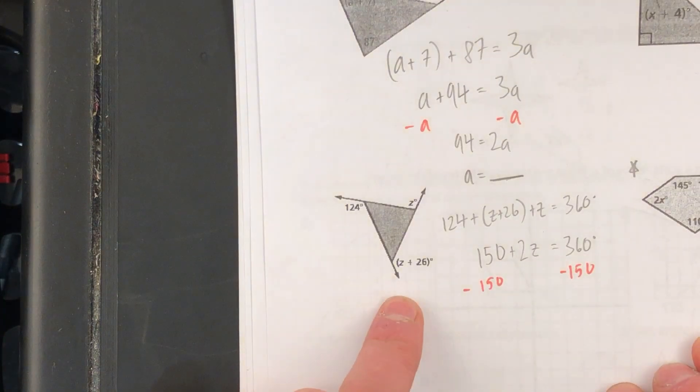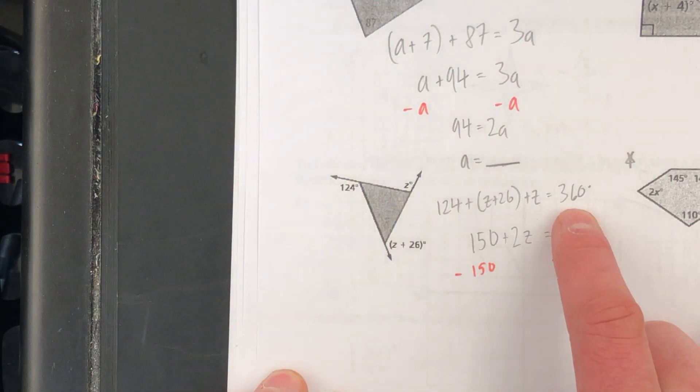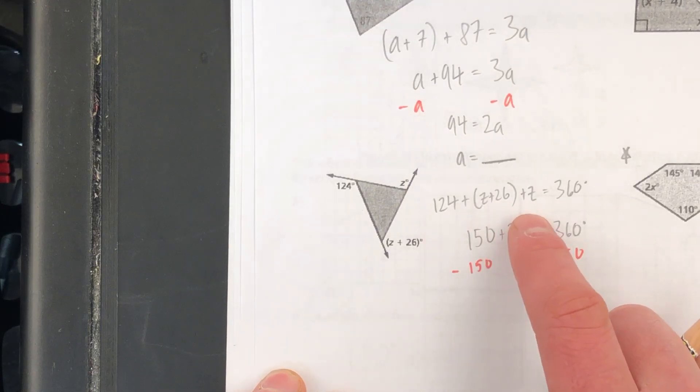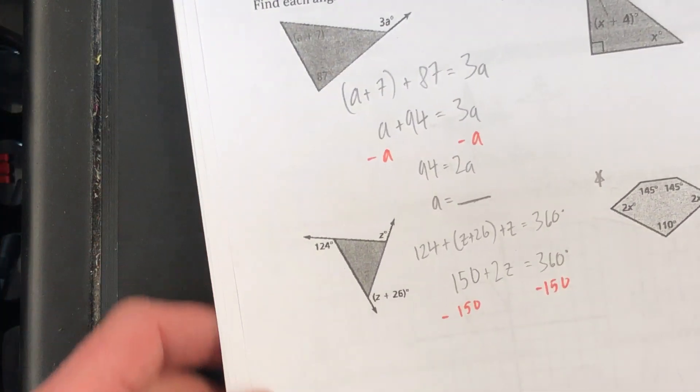This is different because exterior angles, no matter what the polygon, in this case, it's a triangle, but no matter what polygon, the exterior angles must add up to the magical number 360. That's where I get this equation. And I've given you one step and I'm going to let you carry out the rest of the work to find Z.